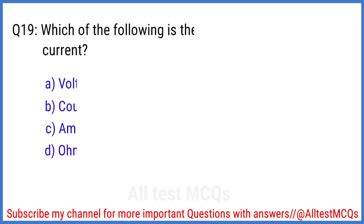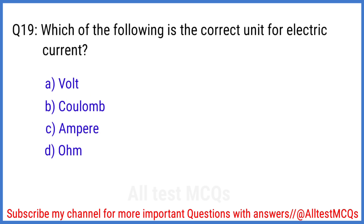Q19. Which of the following is the correct unit for electric current? The right answer is option C. Ampere.